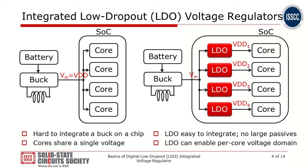Today's SoC integrates a number of cores and a variety of building blocks. In order to supply power to this SoC, a typical practice is to employ bulk DC-DC converters for their high power conversion efficiency. However, bulk DC-DC converters require large passives such as inductors, and therefore it is not easy to integrate them on a chip. The need to provide an independent voltage domain for different cores is ever-growing, and LDO is currently considered the preferred choice of voltage regulation solution for creating such independent voltage domains.